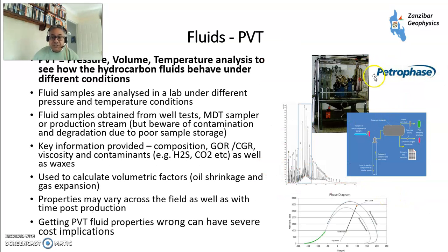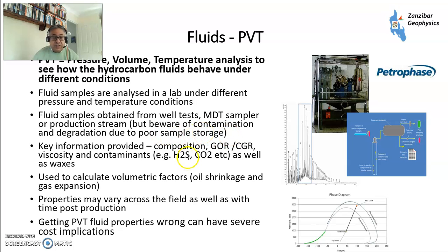Fluids PVT. The best people to talk to are my former colleagues Brian Moffat and Mike Fawcett at Petroface — please check them out. But pressure, volume, and temperature describes how different fluids behave within an oil field. Fluids are obtained from MDT sampling — a wireline sampling tool — from the production stream, from well tests, etc. There are potential issues with contamination and degradation due to poor storage. Key information includes fluid composition shown on a chromatograph, gas-oil ratio, condensate-gas ratio, contaminants such as H2S and CO2, and waxes. You can calculate volumetric factors and use this as a key input to the reservoir simulator.